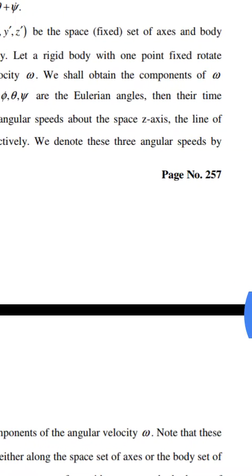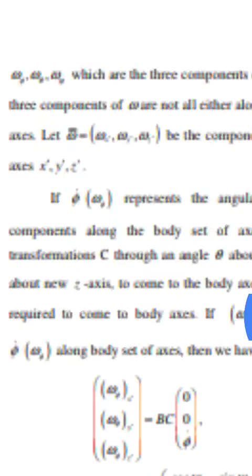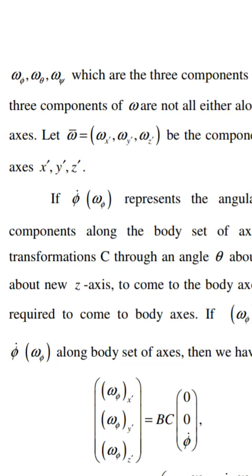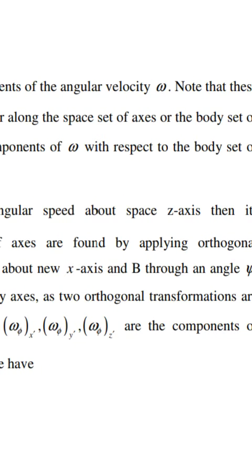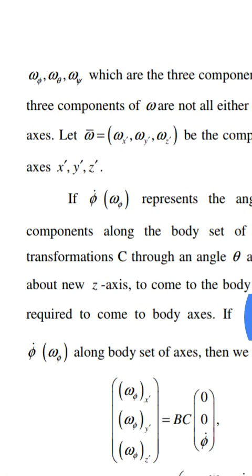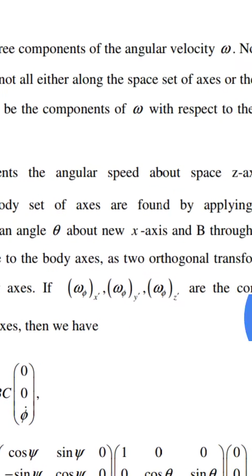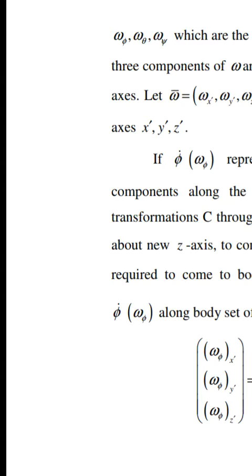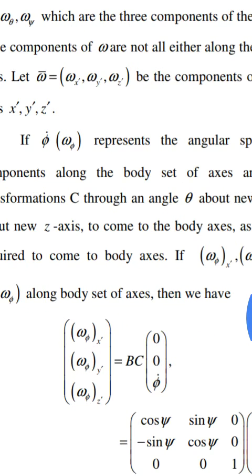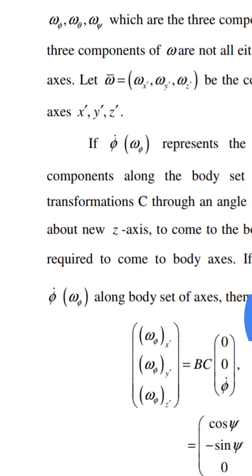We denote these three angular speeds by omega_phi, omega_theta, and omega_psi, which are the three components of the angular velocity omega. Note that these three components of omega are not all along either the space set of axes or the body set of axes. Let omega-bar = (omega_x, omega_y, omega_z) be the components of omega with respect to the body set of axes.